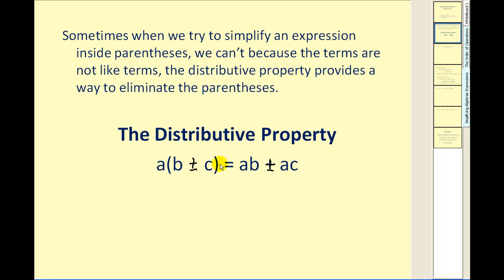So just to review, the distributive property states that A times the quantity B plus or minus C is equal to AB plus or minus AC. Remember, you can think of this as just multiplication across addition or subtraction.